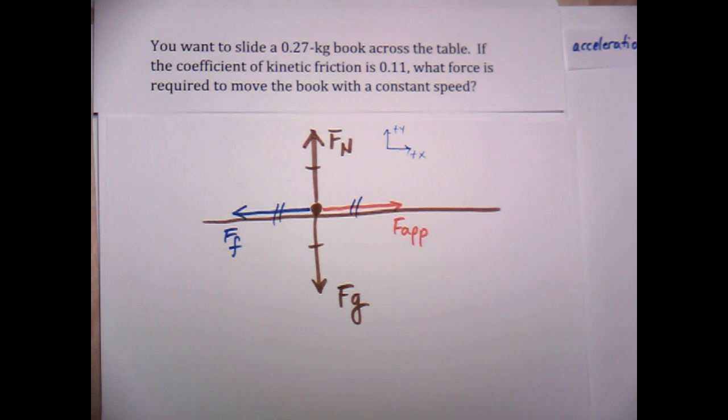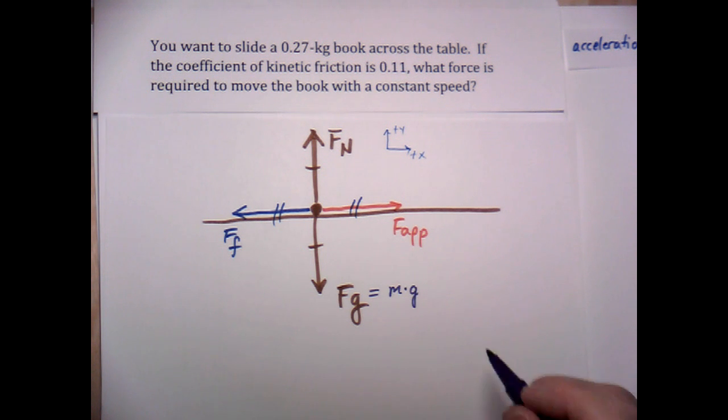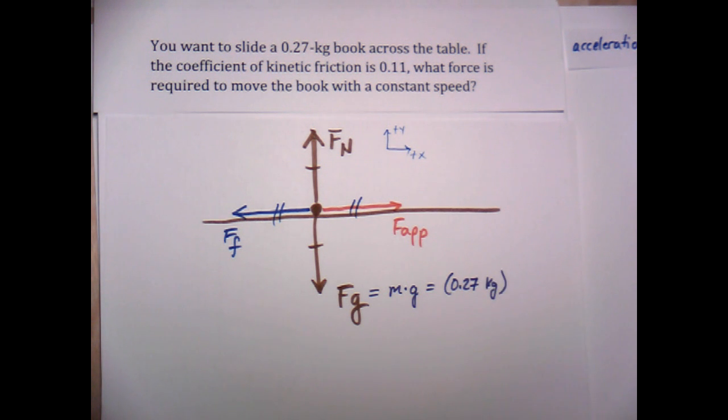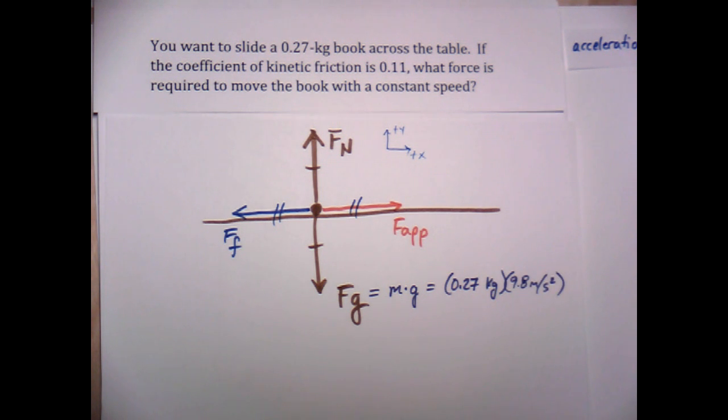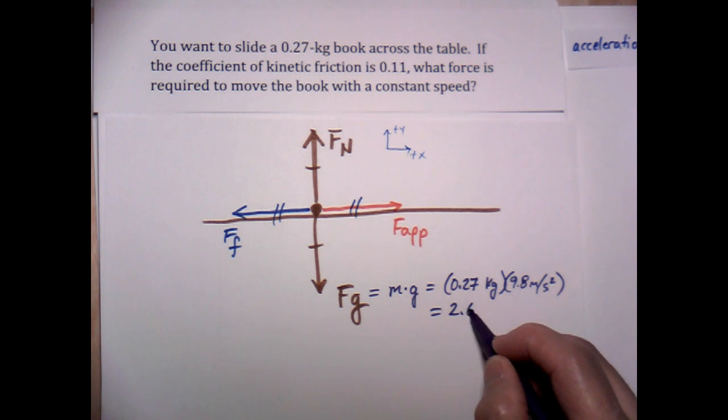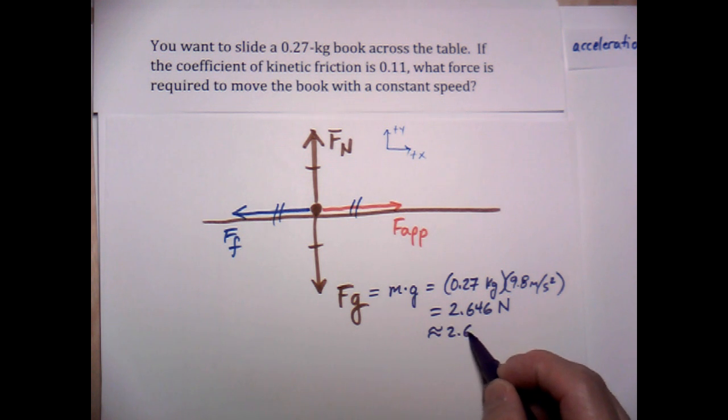So let's go ahead and do some of that, work those out. So force due to gravity is equal to mass times acceleration due to gravity, which is equal to 0.27 kilograms times 9.8 meters per second squared. And that's going to limit us to 2 sig digs, so I'll reflect that in the answer. And that is equal to, that ends up being equal to 2.646 newtons, and I'll call that 2 sig digs 2.6 newtons.